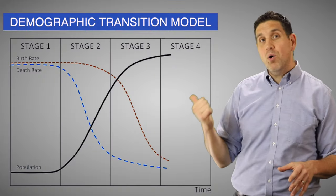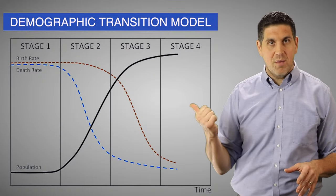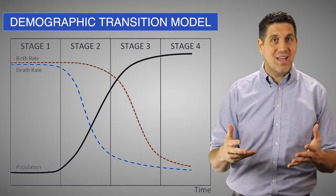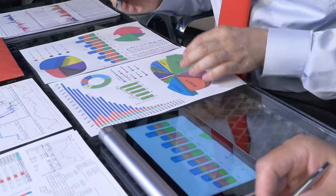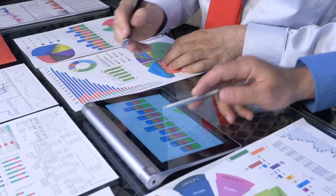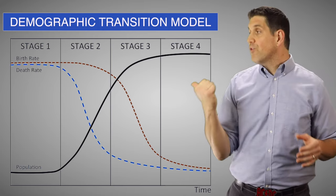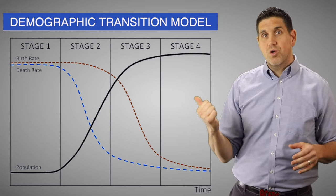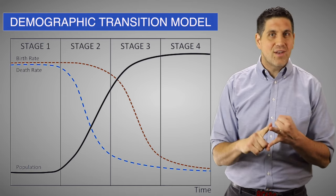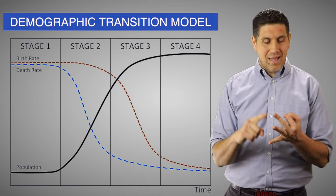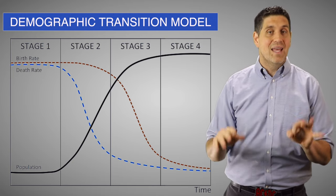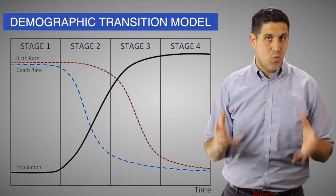Here in Stage 4, we have post-industrial economies, where the focus isn't on manufacturing — it's on service industries like finance, insurance, and healthcare. Birth rates and death rates are low, so there's zero population growth, and life expectancy, gender equality, and living standards are the highest they've ever been in the history of the world.